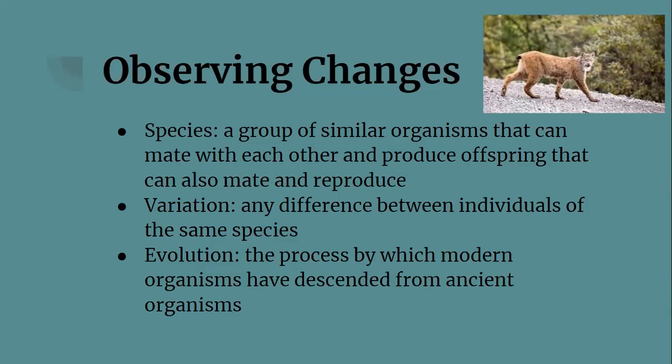A species is a group of similar organisms that can mate with each other and produce offspring that can also mate and reproduce. You would probably have questions about why these squirrels are different colors. This curiosity prompted a scientist named Charles Darwin to get curious about differences observed in natural populations. A variation is any difference between individuals of the same species. Evolution is the process by which modern organisms have descended from ancient organisms. Variation includes things like color, beak size, and feathers.